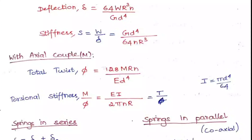The next case is the axial couple, where a couple moment is applied to the spring. Here, the twist and stiffness are the important values. The twist formula is θ = 128MRN / ED⁴, where M is the couple acting, and instead of G we use E — the Young's modulus of the material.